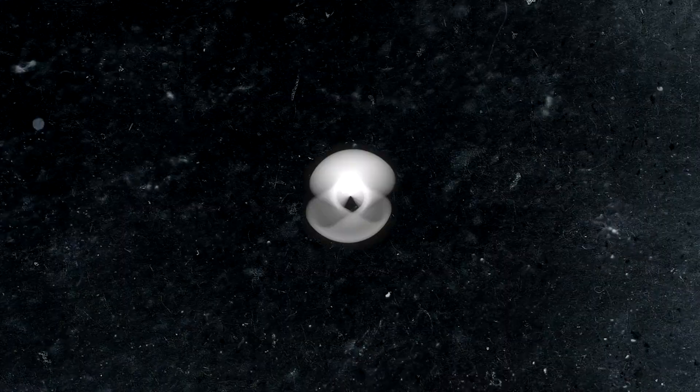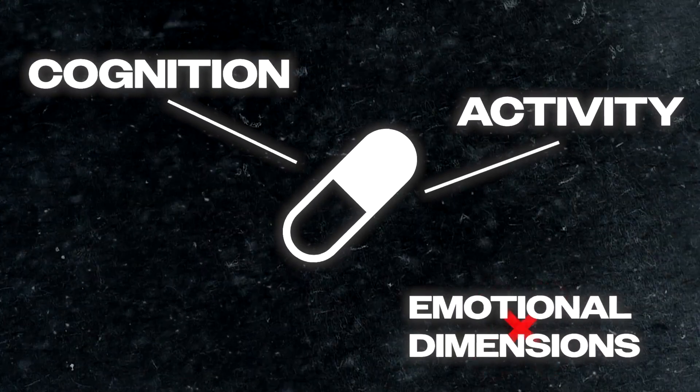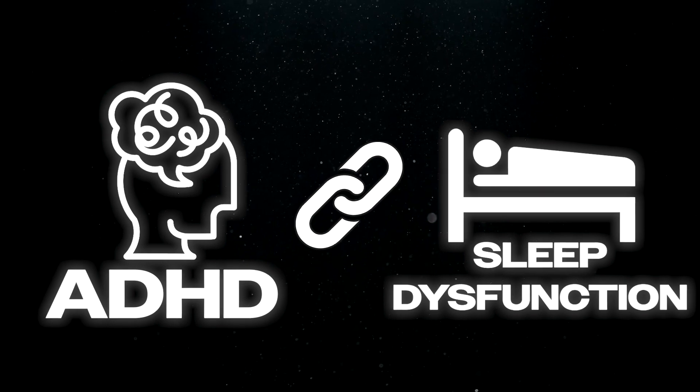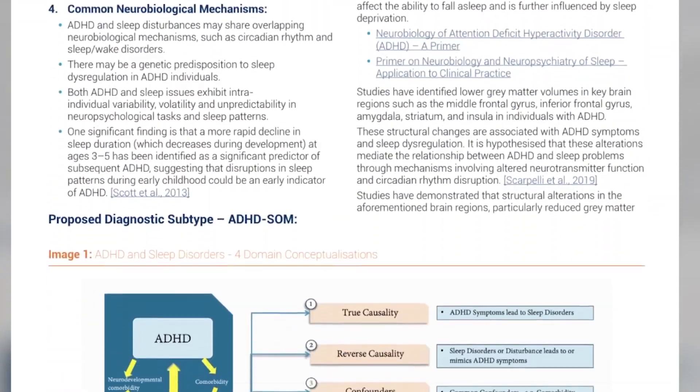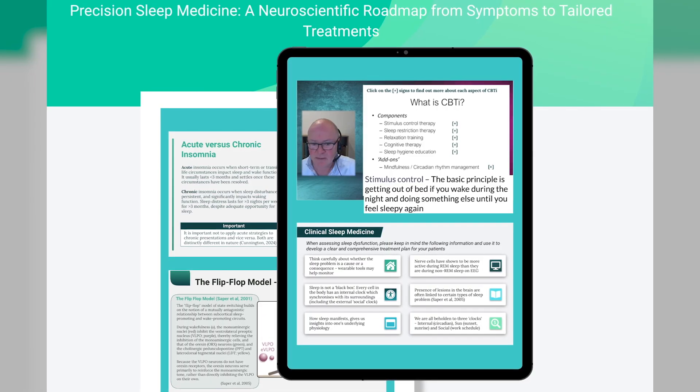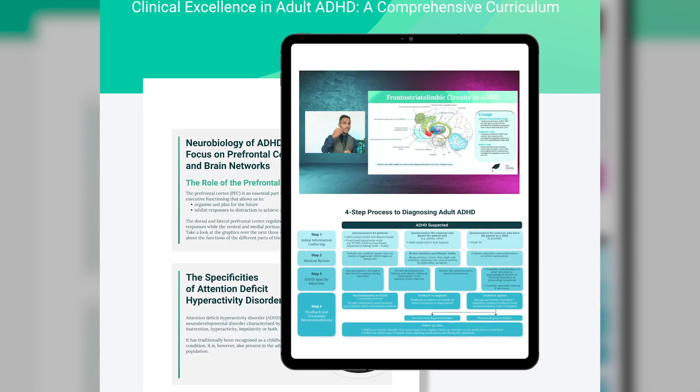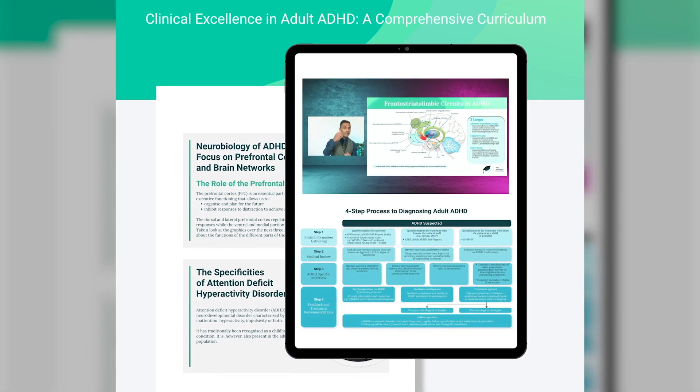It's important for clinicians to take a broader approach addressing each of these dimensions. A good example: in ADHD treatment, a stimulant is often prescribed to improve cognition and activity, but the emotional dimensions aren't addressed. You can examine this by looking at sleep — in ADHD there is a very high comorbidity with sleep dysfunction. On the academy, we have a precision sleep medicine course and a neuropsychiatry of sleep course. Taking a broader approach to ADHD management means connecting it to conditions like insomnia, sleep dysregulation, and even PMDD, which is a manifestation of emotional arousal.